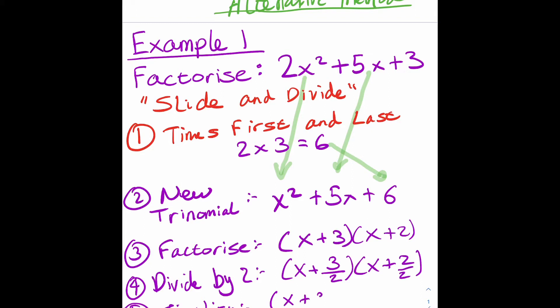We need to make sure that we simplify it. If we forget to simplify, the answer at the end will be wrong. So x plus 3 over 2, well 3 over 2 can't be simplified so we leave it. But 2 over 2 is 1. So I write x plus 3 over 2, then x plus 1.